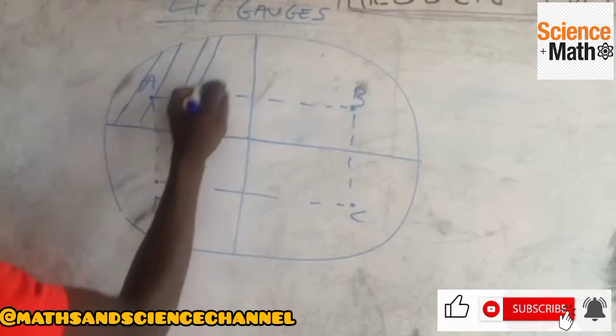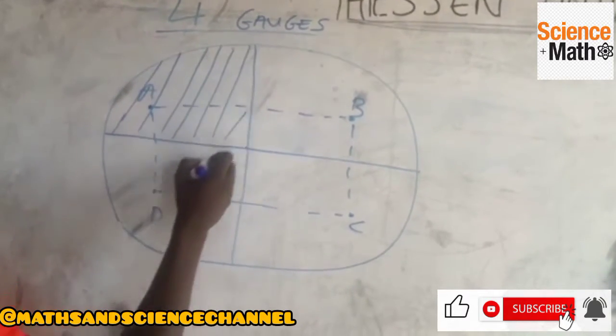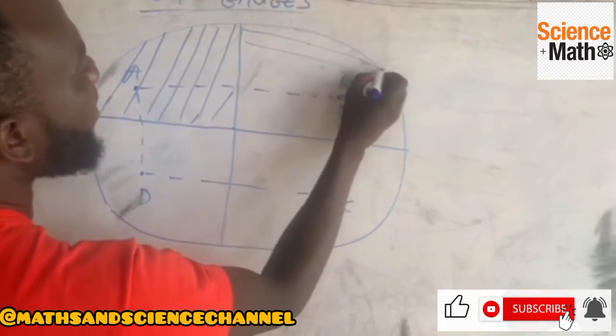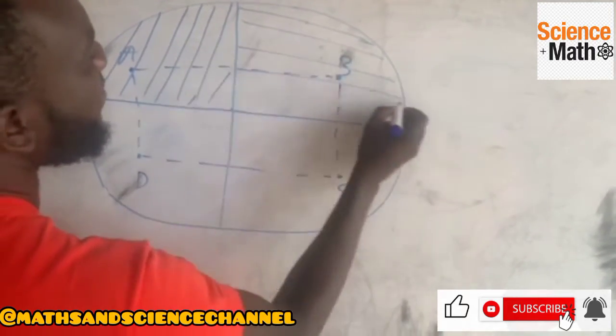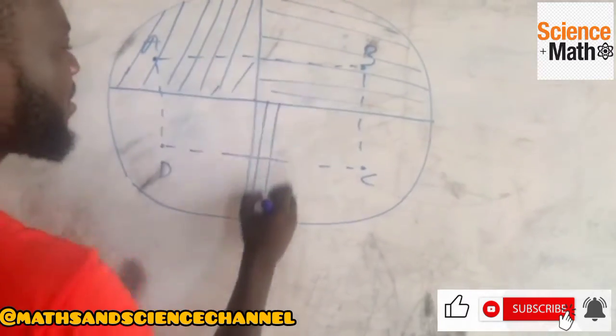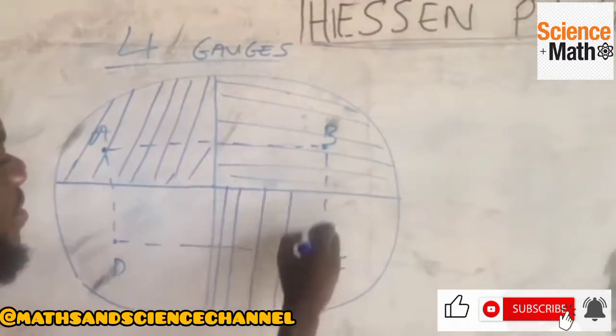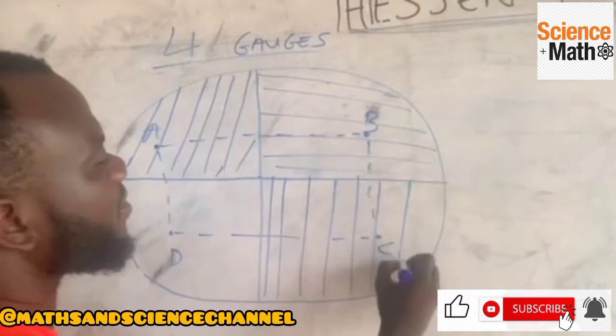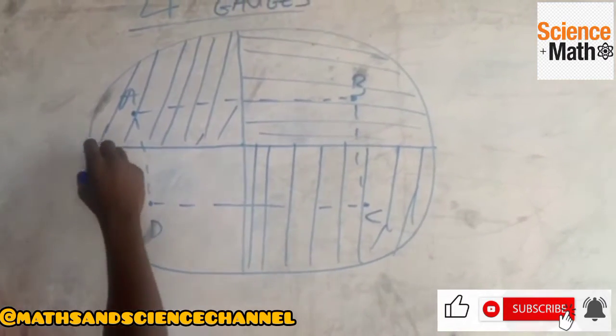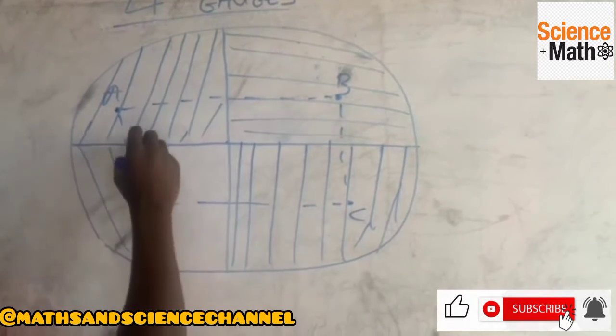This one, area of region C. This whole region is for C, then this two becomes the area of region D.